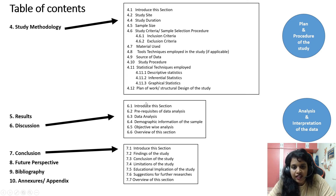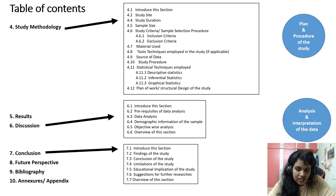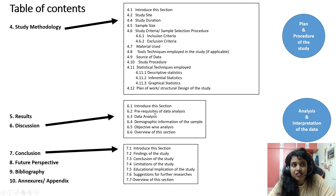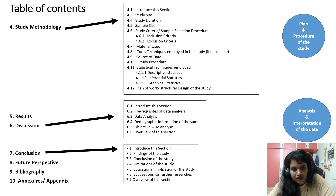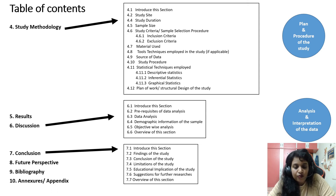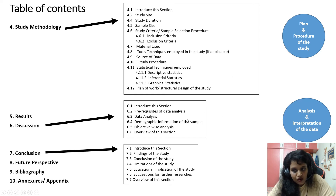The results section presents the raw data from your research. The discussion section — the sixth section — is about interpretation and analysis of that data. It has six parts: introduce the section, describe pre-requisites for data analysis, analyze the data, present demographic information of your subjects, then perform objective-wise analysis for both primary and secondary objectives, and provide an overview of the section.